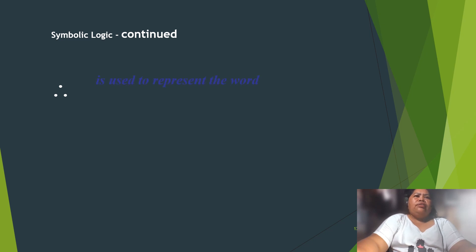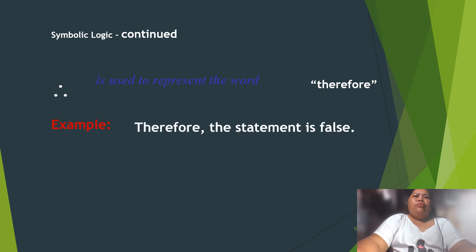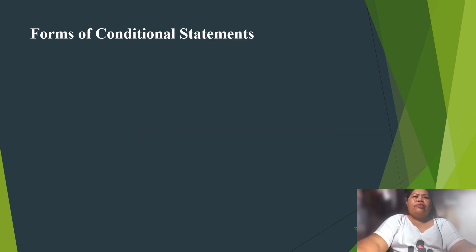Three dots '∴' are used to represent the word 'therefore.' Example: therefore, the statement is false.